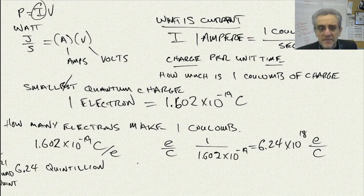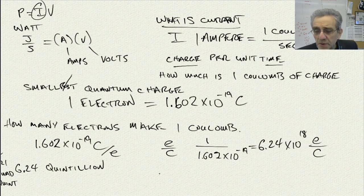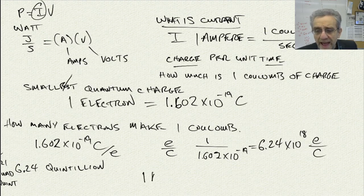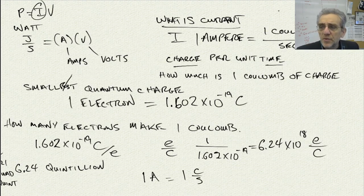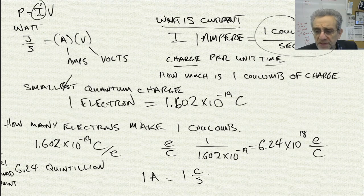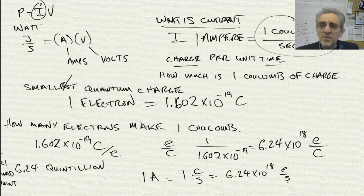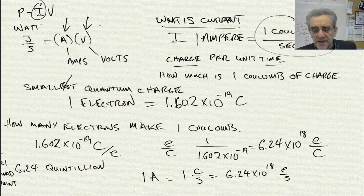So we know now that, therefore, 1 amp of current is equal to 1 coulomb per second, which is equal to 6.24 times 10 to the 18 electrons per second. Now, now that we know what an amp is, because we kind of came from here, now we know what the amp is. Next question is, what's the volt?